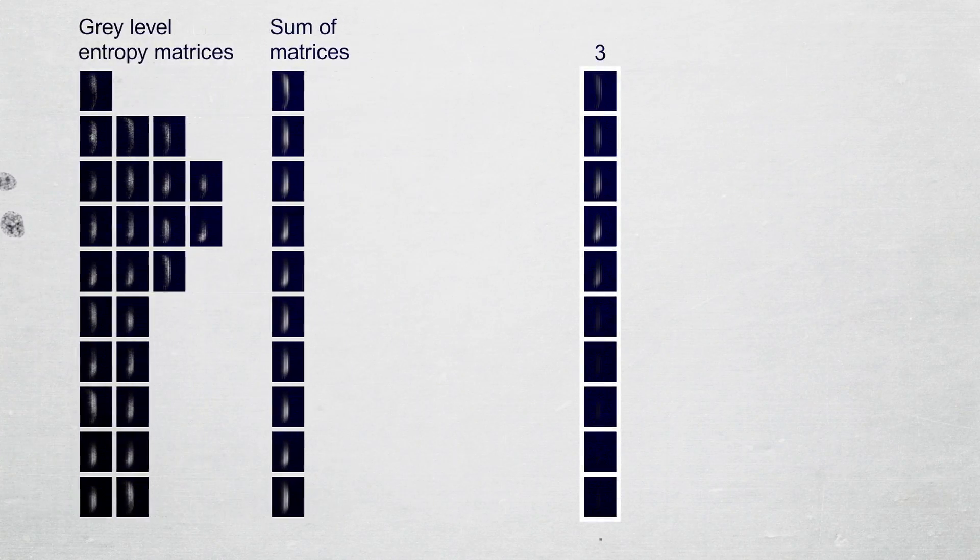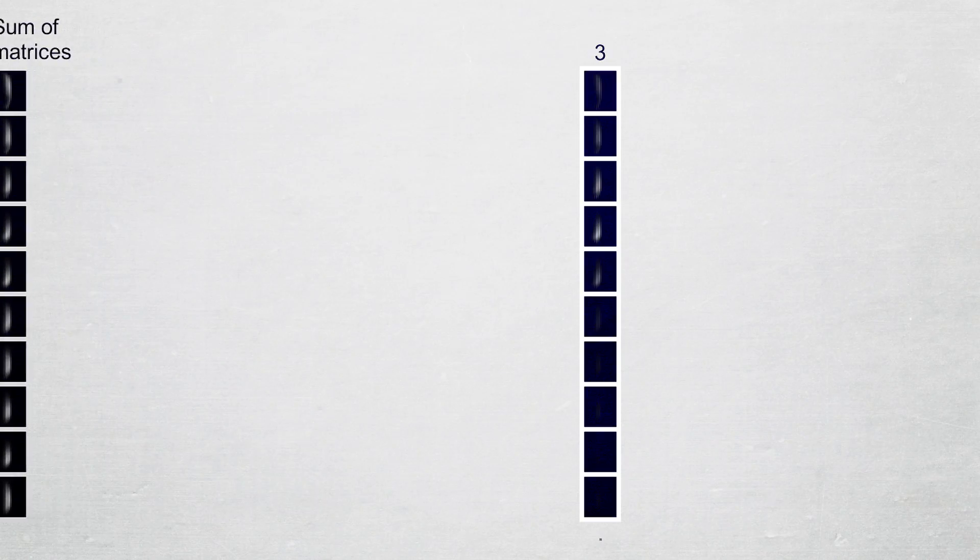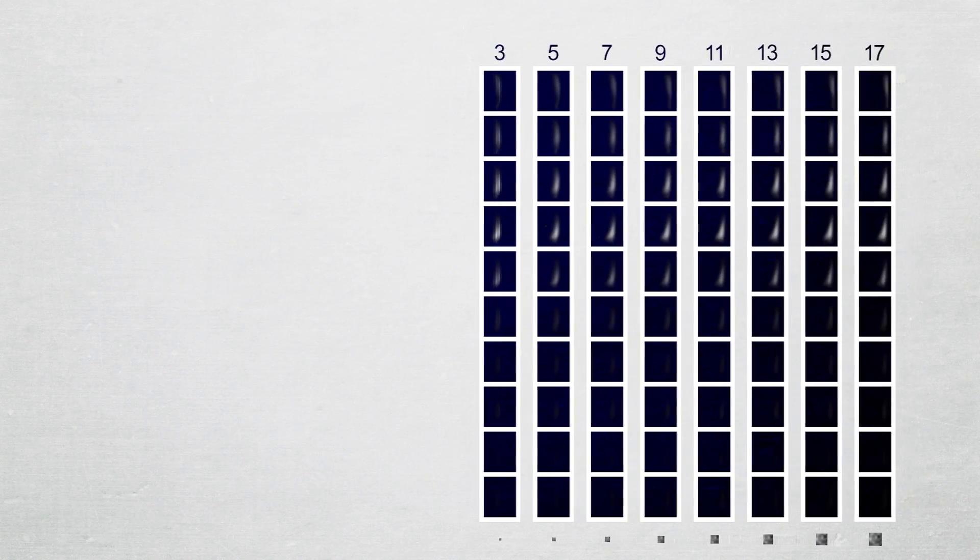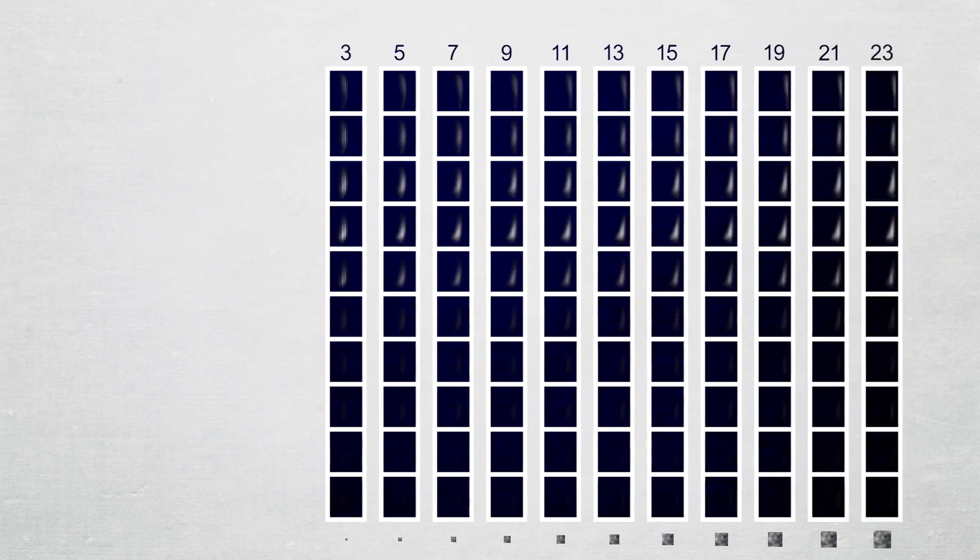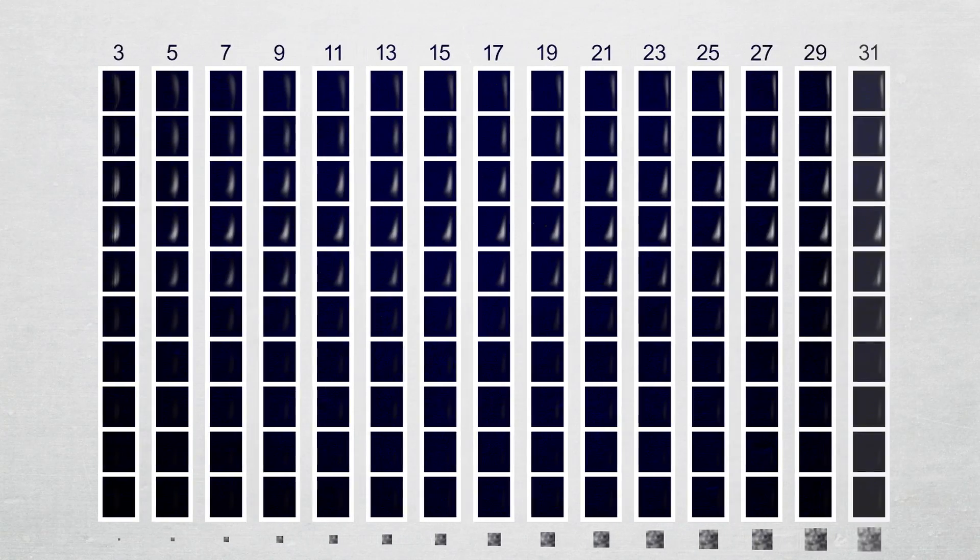This completes the computation for the 3 by 3 window. To analyze at multiple scales, we also compute the matrices for windows of size 5 by 5 and every odd number up to 31 by 31 pixels.